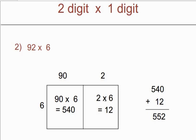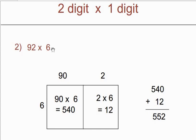Same way take 2 from here and 6 from here, so you will get 12. Now take a summation of these 2 numbers. So 540 plus 12 is equal to 552, our answer. So 552 will be the answer of 92 multiply by 6.